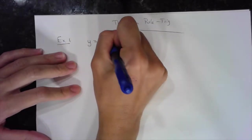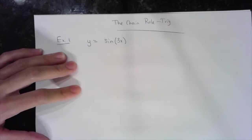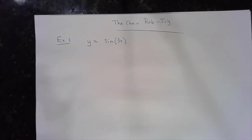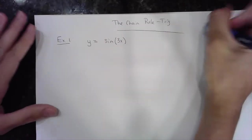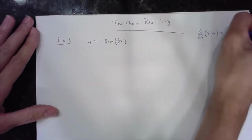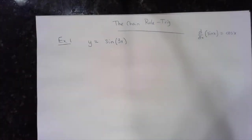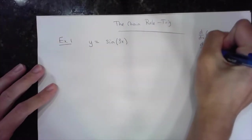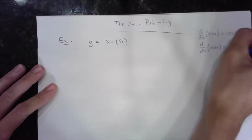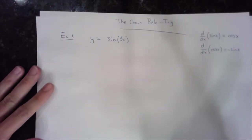Let's start nice and easy. Let's say I have sine of 3x. Sine of 3x is a little bit different than just sine of x. The derivative of sine of x is equal to cosine of x, and the derivative of cosine of x is equal to negative sine of x. These have to be memorized.